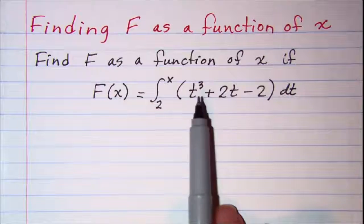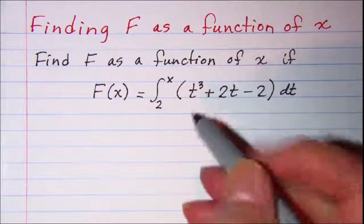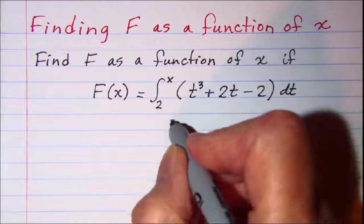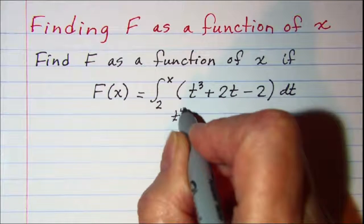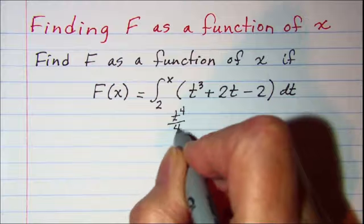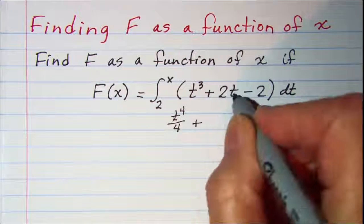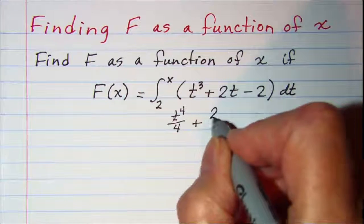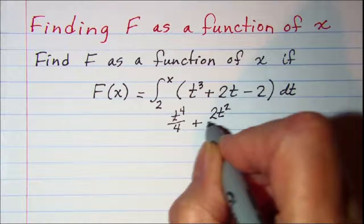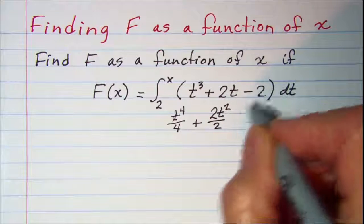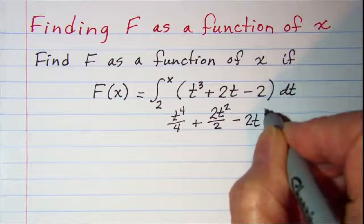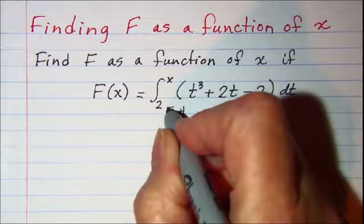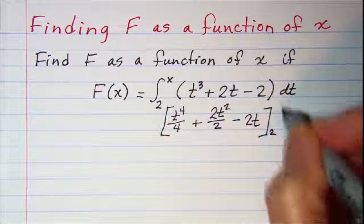Now when we integrate this t cubed we increase the exponent by 1 and divide by the new exponent. So we have t to the fourth divided by 4 plus 2t squared divided by 2 minus 2t, and we are evaluating that from 2 to x.